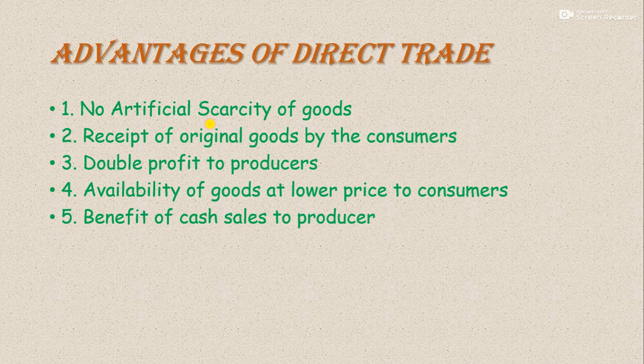Goods ki supply peeche se proper aa rahi hai, lekin middleman ne goods ko stock karke apne godowns ke andar hold karke rakha hai. Usne goods ki supply ko short show kar diya society mein. Producer ne supply short nahi ki; producer apni usi speed se production kar raha hai. To agar direct trade hoga, yaani ki producer aur consumer ke beech mein koi bhi middleman nahi aa raha hoga, to yeh situation create hi nahi hogi. Producer always apne consumers ki demand ke according production karega. Second advantage: receipt of original goods by the consumer. Bahut saare middleman aise hote hain jo apni goods mein adulteration kar dete hain, lekin producer apni goodwill kharab nahi karta — woh original goods consumer tak pahunchata hai.